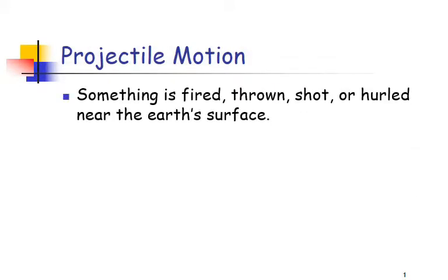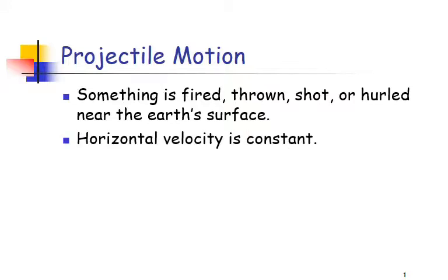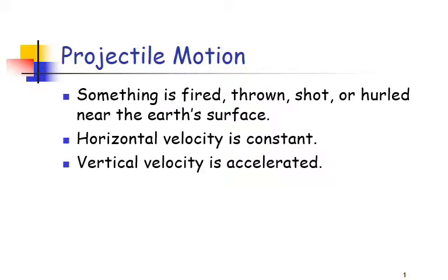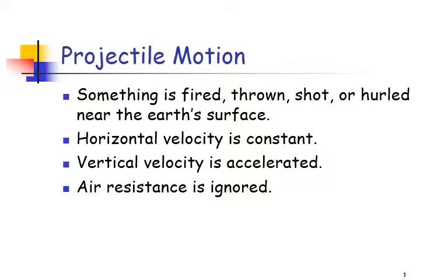For projectile motion — something that's fired, thrown, shot, or hurled near Earth's surface — the horizontal velocity is constant because gravity does not act in the horizontal direction. As long as there's no air resistance, the horizontal velocity stays the same. The vertical velocity, however, is accelerated. The acceleration due to gravity is negative 9.8 meters per second squared, and we are going to ignore air resistance.